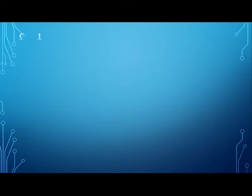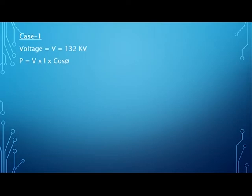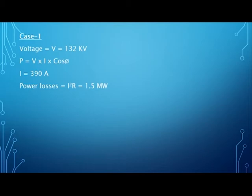In case one, electrical power is transmitted at a voltage of 132 kV. We know that real power equals voltage multiplied by current multiplied by power factor. After doing the necessary calculations, the value of current is 390 amperes, and the power losses at this value of current are 1.5 megawatts. So if we use a transmission voltage of 132 kV, the power losses will be 1.5 megawatts.